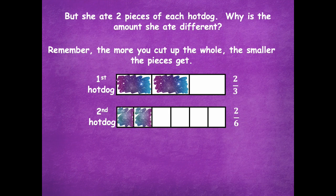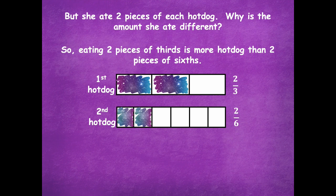Remember, the more you cut up the whole, the smaller the pieces get. So eating two pieces of thirds is more hot dog than two pieces of sixths. Just because they both have two pieces, you can't compare those by just looking at the numerator. We have to be able to draw a model to help show pictorially which one is more or which one is less.